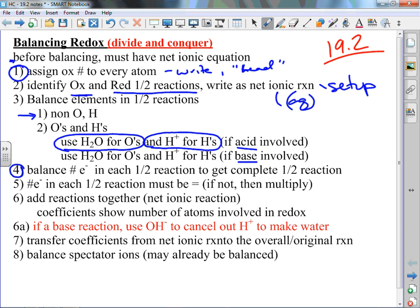Number four, you balance the number of electrons in each half reaction to get the complete half reaction. If you've got two iron atoms and they both lost electrons, you've got to take that into account. Number six, add the two net ionic equations back together. This goes back to that divide and conquer. We divided stuff and balanced it, now we're putting it back together.